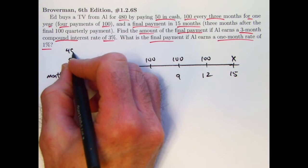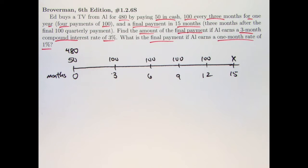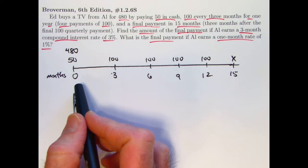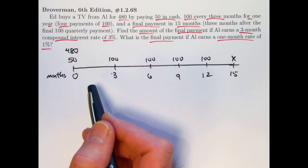The TV is worth 480. So the basic problem solving idea here about how to solve for X is that we want to equate either the future values of all these quantities, say at time 15, or the present value of all these quantities at time zero. You can do it either way.